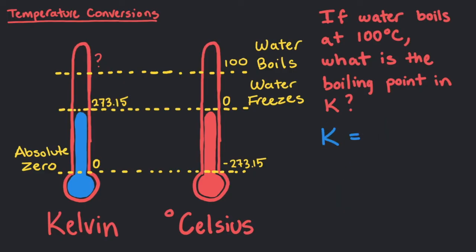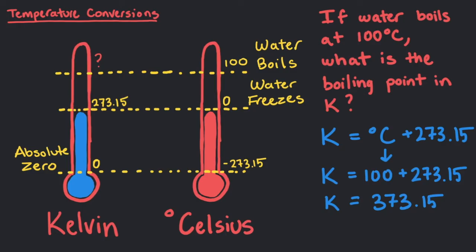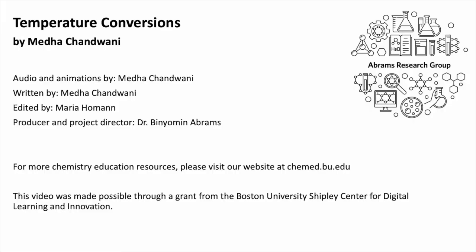Kelvin equals Celsius plus 273.15. So we can replace Celsius with 100 degrees. 100 plus 273.15 is 373.15. So our final answer is 373.15 Kelvin.